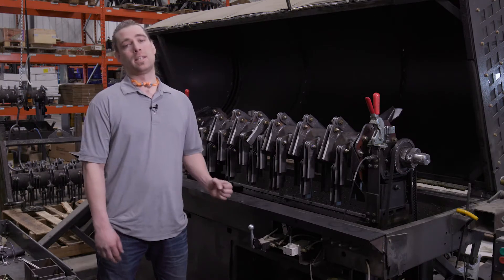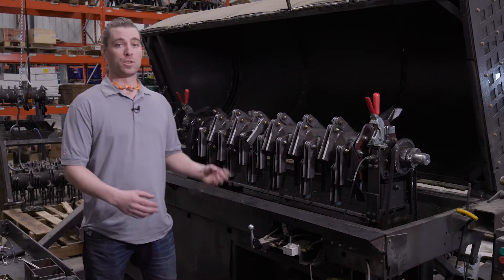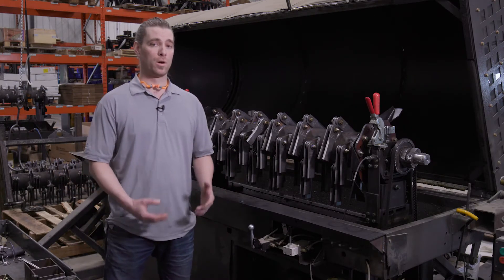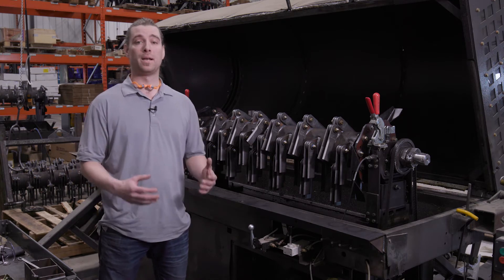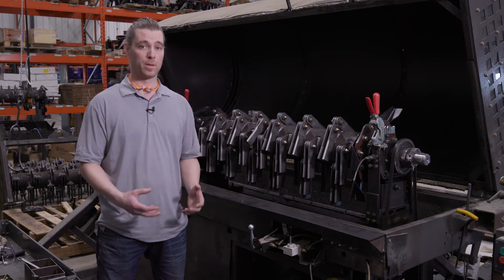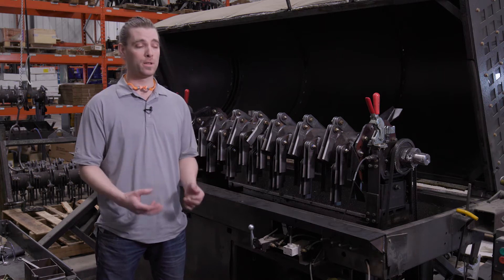This is our balancing stand. We use this to balance both our straw chopper rotors and our SEU rotors. These pieces of equipment spin at really high speed, so it's really important that they're in balance before they get into the field.